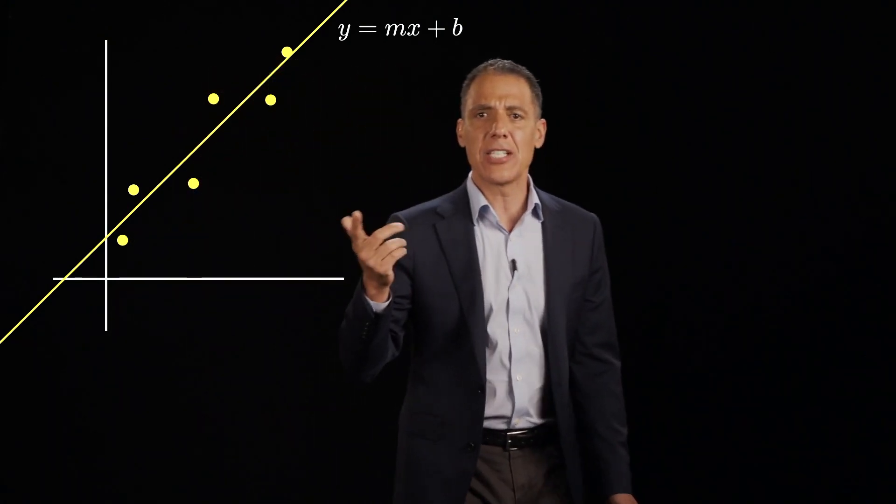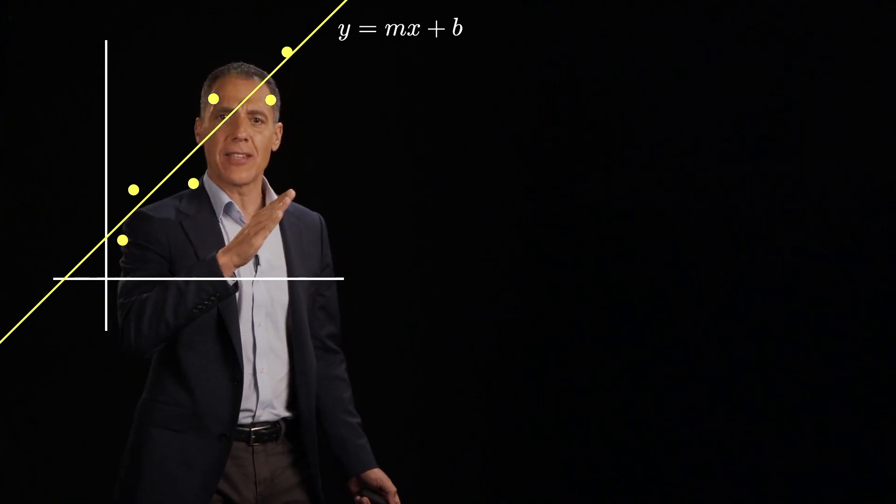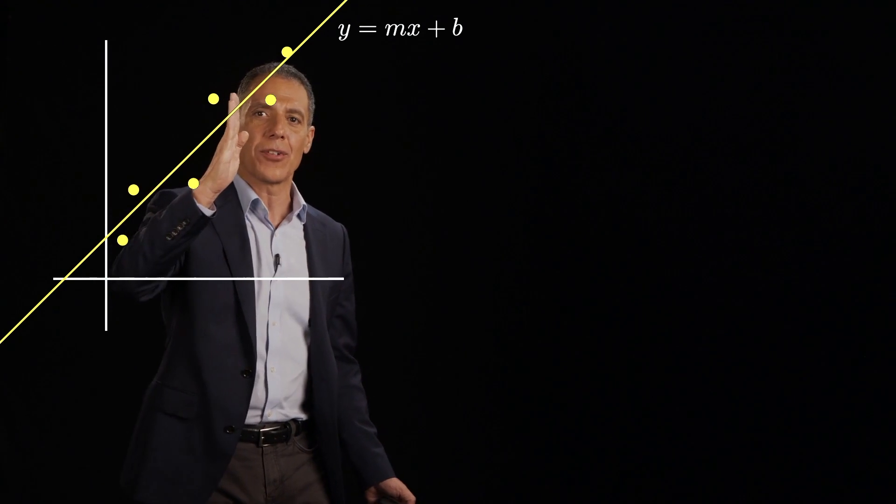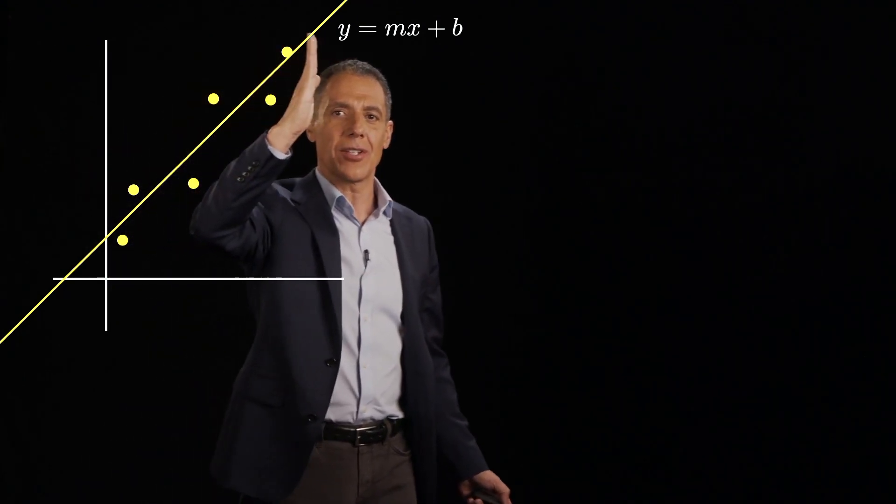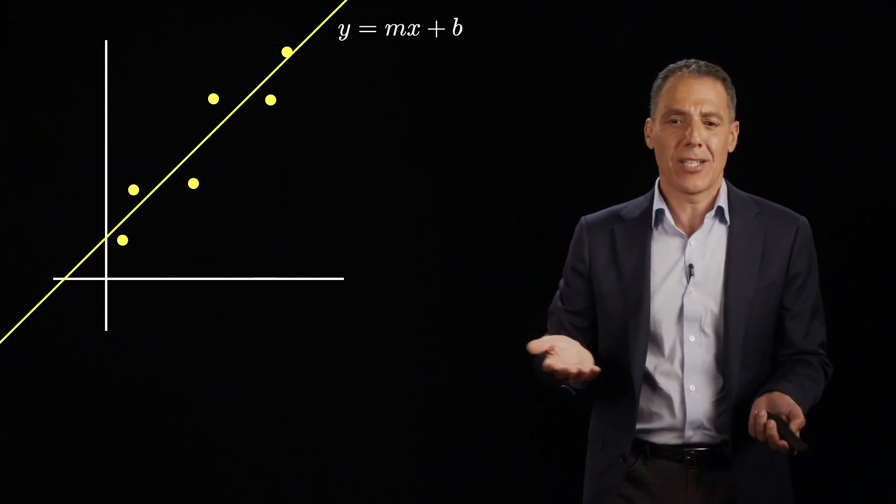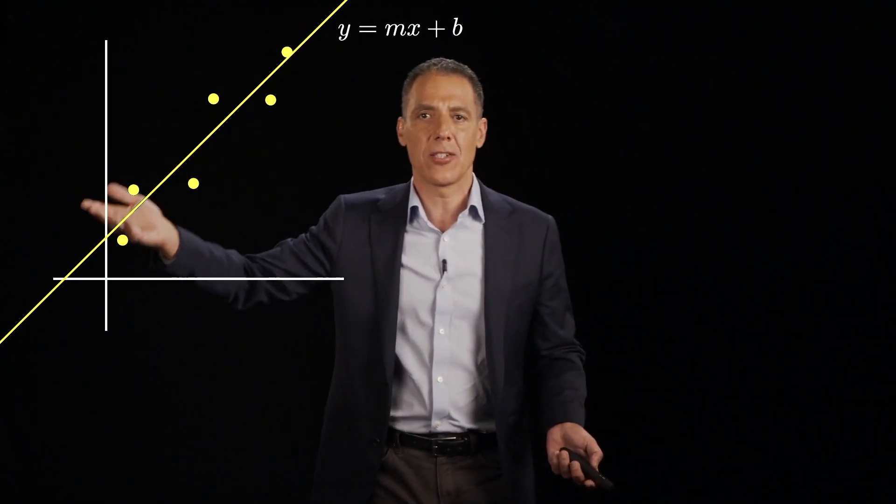And so now, how do we do this? I can't just take any two points, because if I take these two points over here, I'm going to get this line. And if I take these two points, I'm going to get this line, or this line, or this line, or this line. So I could take two points and fit a line to it, but it's nonsense.